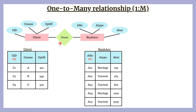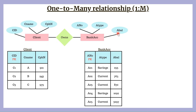All right, let's get started. First let's start with the ER model. Here we have two entities: client and bank account. The client entity has three attributes — client ID, client name, and client phone number — and the bank account entity also has three attributes: account number, account type, and account balance.